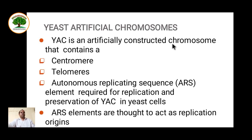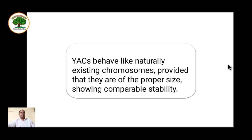YAC is an artificially constructed chromosome that contains a centromere, a telomere, and most importantly an autonomous replicating sequence — that is ARS sequence. This element is required for replication and preservation in yeast cells. ARS elements are thought to act as a replication origin in eukaryotic cells. There is also presence of RIC sites that help in replication in bacteria or E. coli.